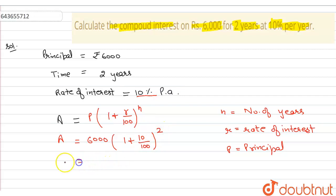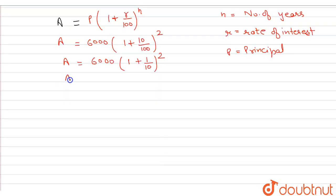After solving this, we get a is equal to 6000, 1 plus 1 upon 10 whole power 2. Solving all these, we get a is equal to 6000 into 11 by 10 into 11 by 10.